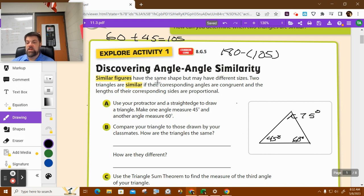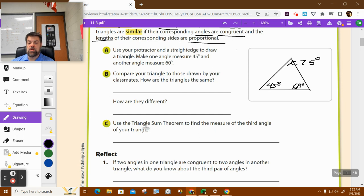So now, similar figures have the same shape but different sizes. Two triangles are similar if their corresponding angles are congruent. So their angles are congruent and their lengths are proportional. Use your protractor and a straight edge to draw a triangle. Make one measure 45 degrees and another 60. It says compare your triangle to those of your classmates. So when you're done drawing the triangle, if you use the protractor, your triangle might be a little bit bigger or smaller than theirs. But if the angles are the same, they should be the same shape. Does that make sense?